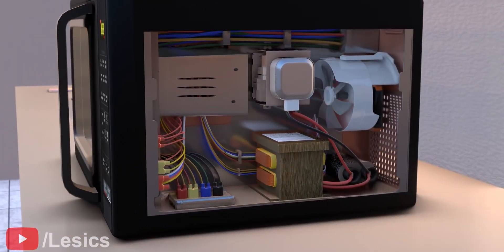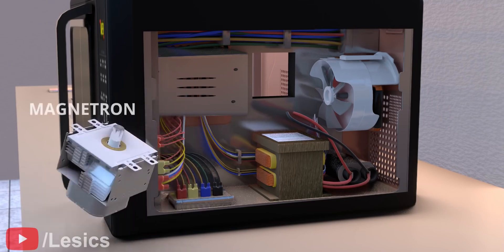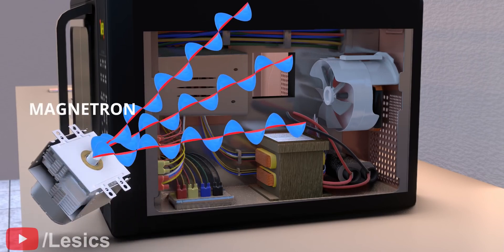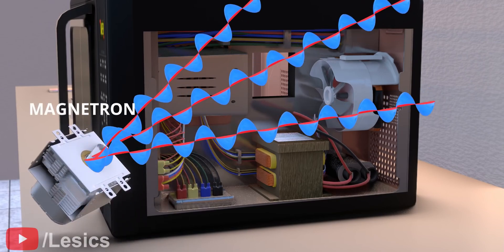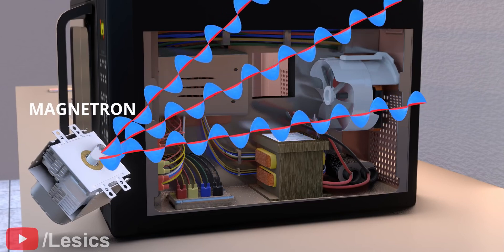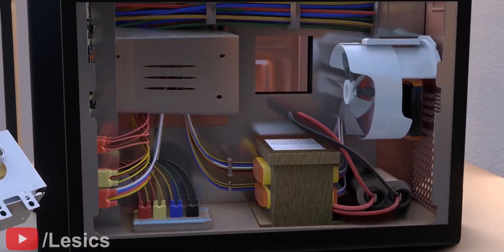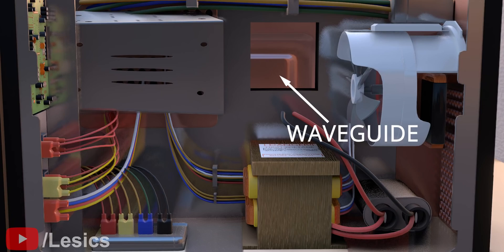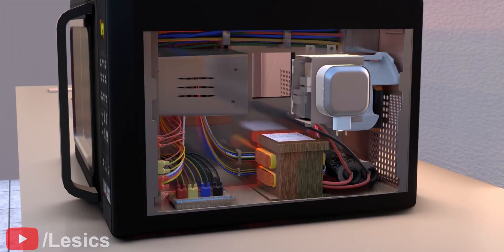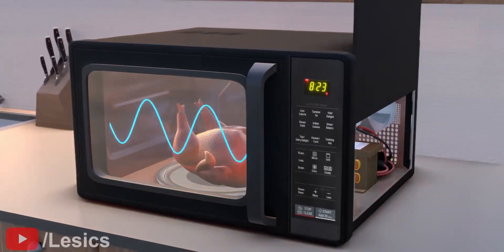The component responsible for producing microwaves is known as a magnetron. A magnetron emits microwaves in all directions. To confine the wave to propagate in one dimension, the magnetron is attached to the waveguide. From the waveguide, the waves come into the cooking chamber to heat food.